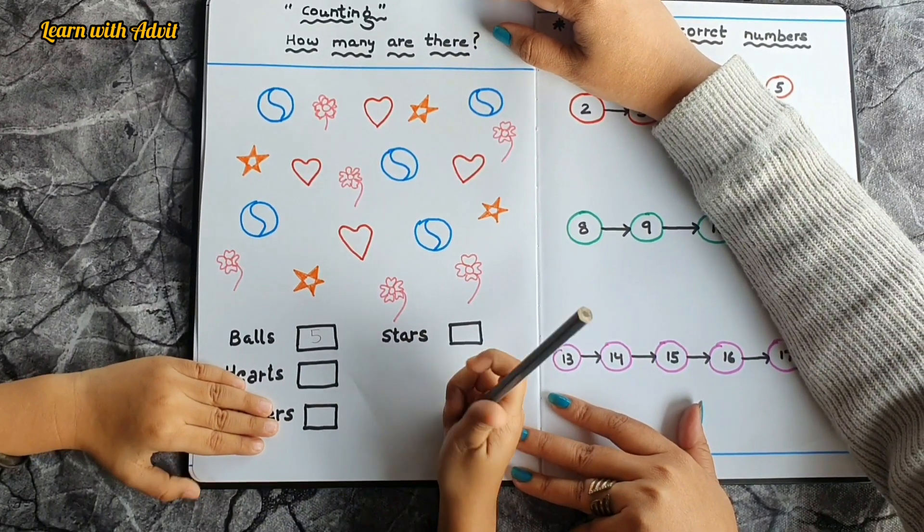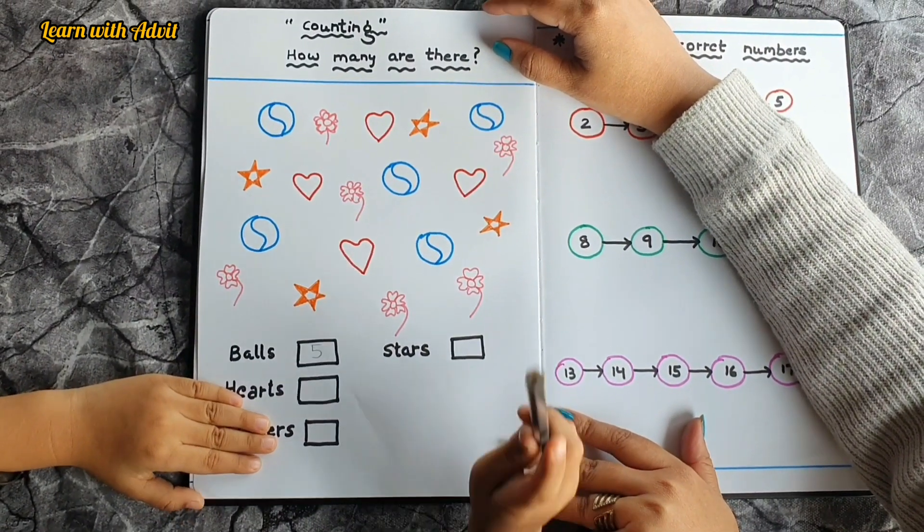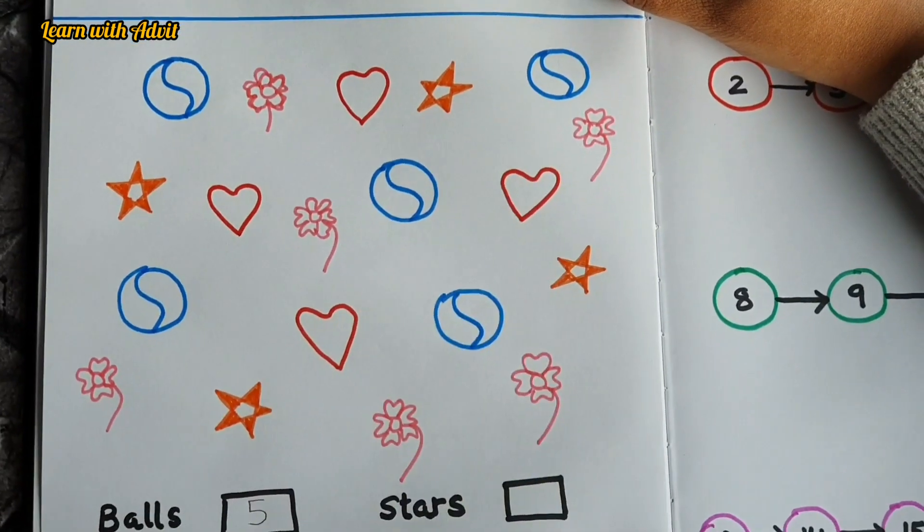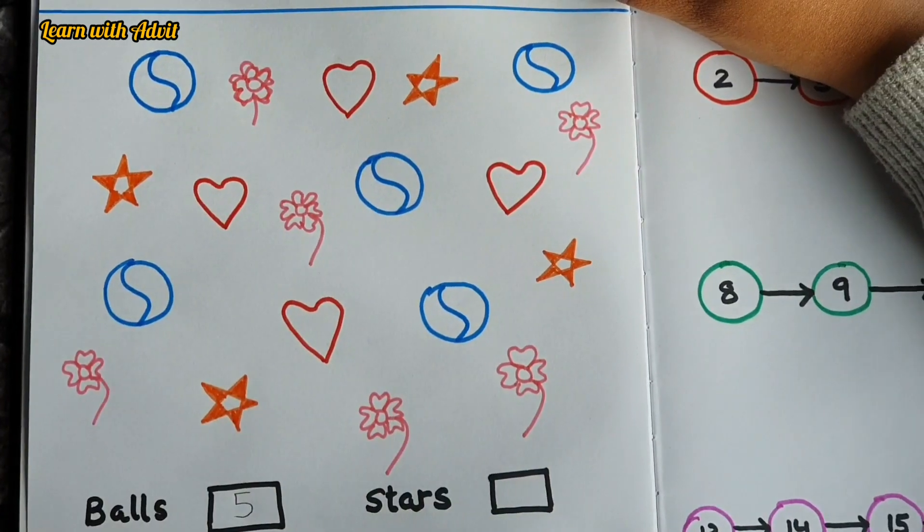Next is hearts. How many hearts are there? One, two, three, four hearts. Very good, write it down.